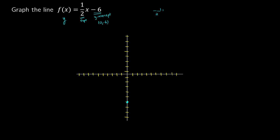We could find some values, or we could make use of our slope — let's do both. Using our slope of one half, whenever we go up 1 (from negative 6 to negative 5), we have to go over 2 in the x-direction. So starting from 0, negative 6, the next point is 2, negative 5. Doing it again, we go 2 to the right, which is x equals 4, and 1 up, which is negative 4. The line should look something like this.